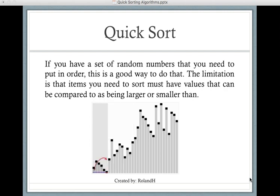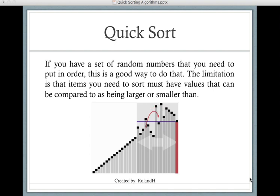The limitation is that the things you want to sort have to have values that could be either less than or greater than. So it's good for numbers, but if you wanted to sort colors alphabetically, not so much. This is a GIF from Wikipedia that shows quick sorting in action.